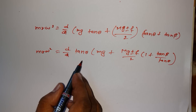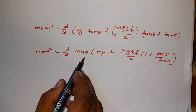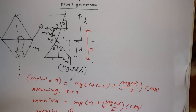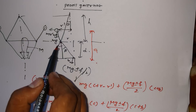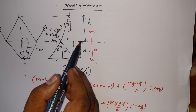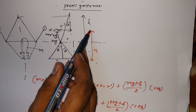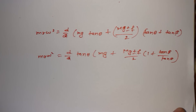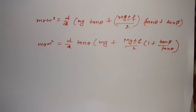Now we need to find what tan theta equals in another way. Looking at the triangle with theta, r, and h: tan theta equals r divided by h. So we can substitute this into the equation.